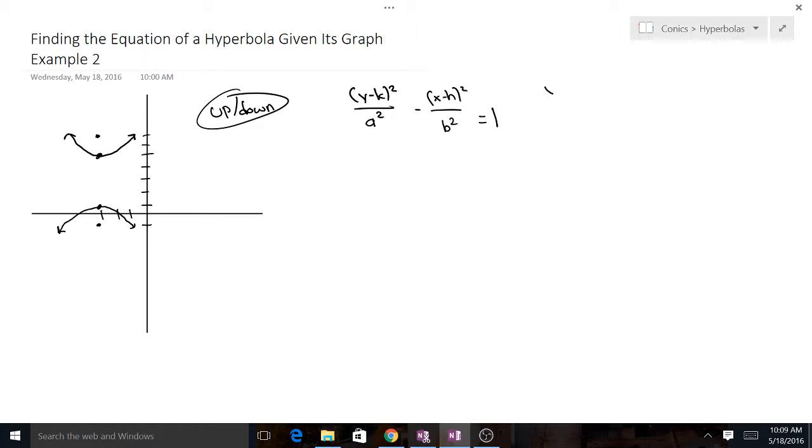Okay, so we figured that out. And next I would just write out our vertices. We've got one at (-3, 5) and we've got another one at (-3, 1). And then may as well write out our foci. We've got one at (-3, 7) and then we have (-3, -1).